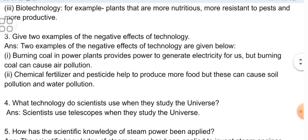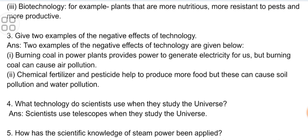Third short question: Give two examples of the negative effects of technology. Answer: Burning coal in power plants provides power to generate electricity for us, but burning coal can cause air pollution. Chemical fertilizer and pesticides help to produce more food, but these can cause soil pollution and water pollution.